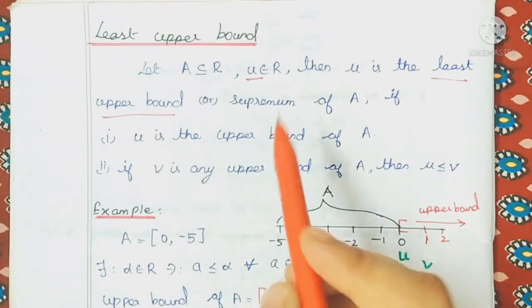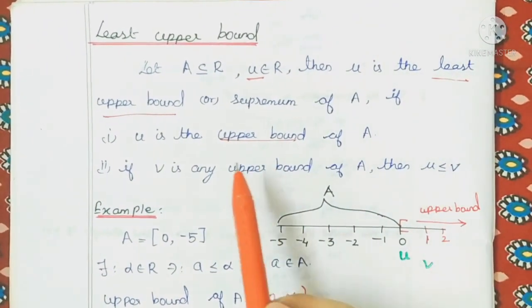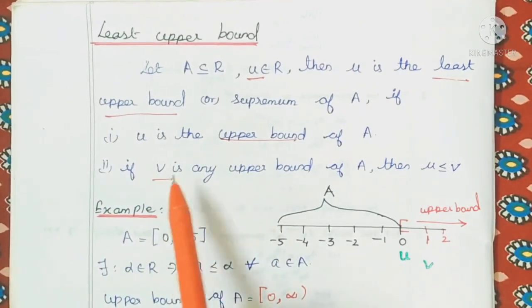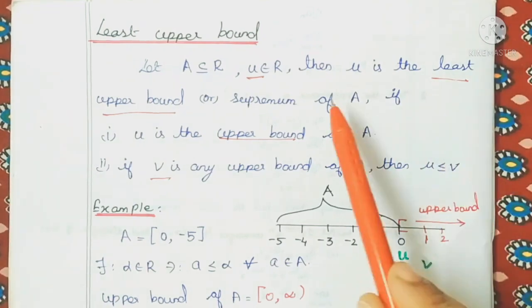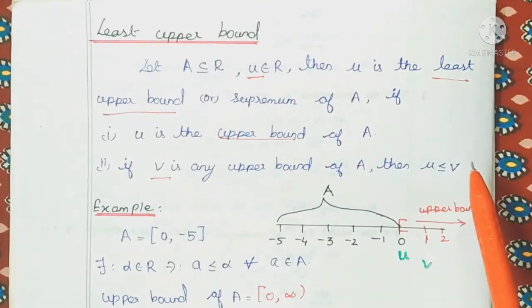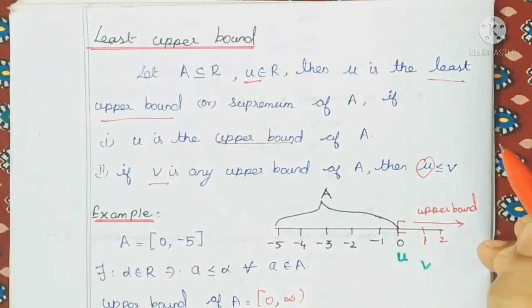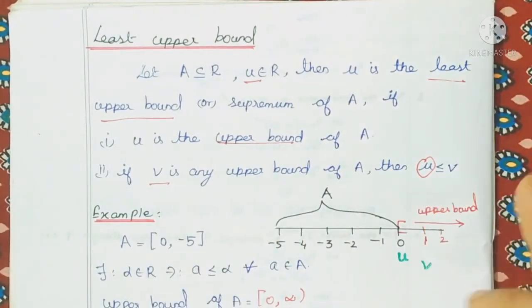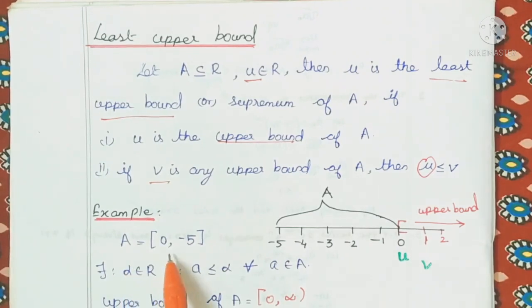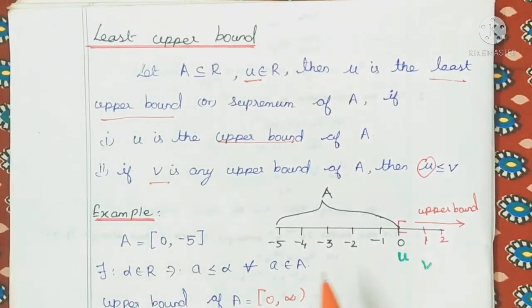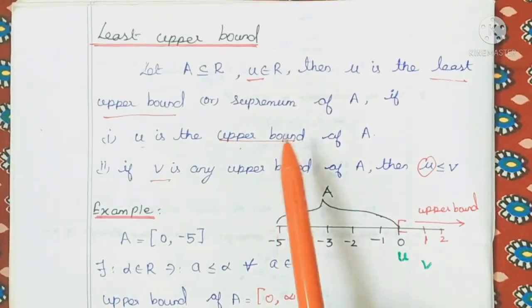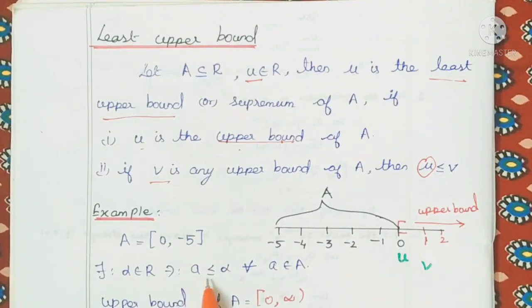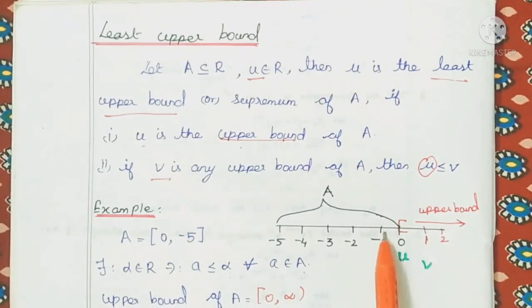U is the least upper bound. For all a belonging to A, U is the least upper bound — meaning U is greater than or equal to every element in A.